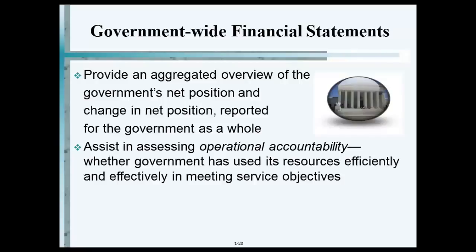Let me give you an example: New Jersey. We have New Jersey state government, which is involved in many different things. Rutgers University — is that part of the state of New Jersey? Yes. It's a component unit of the state of New Jersey because Rutgers gets quite a bit of money from the state. How about New Jersey Transit? Yes, and that's called a business-type activity operated by the state.